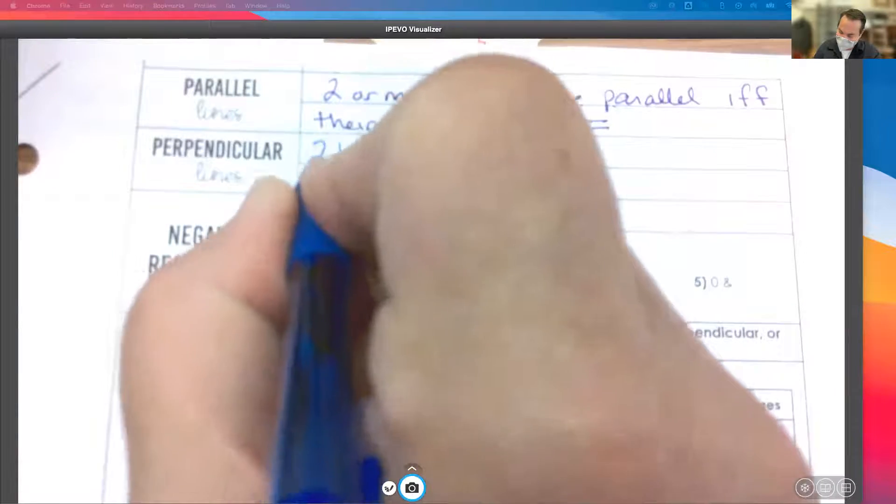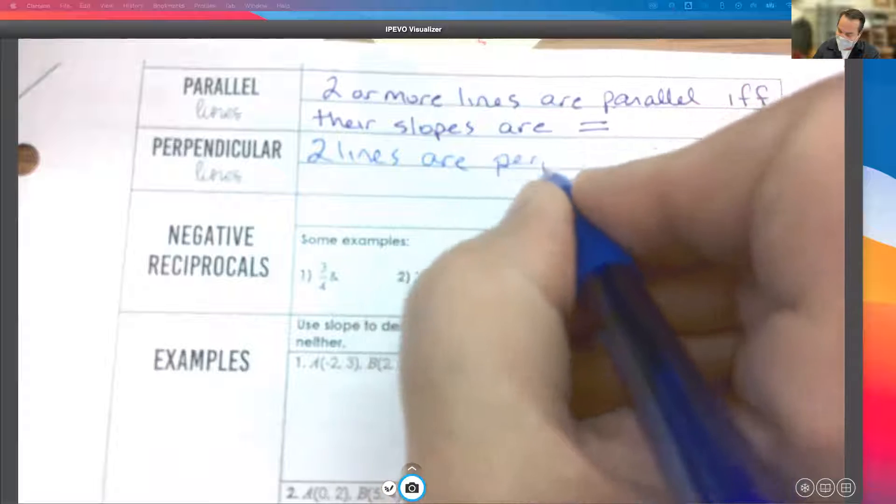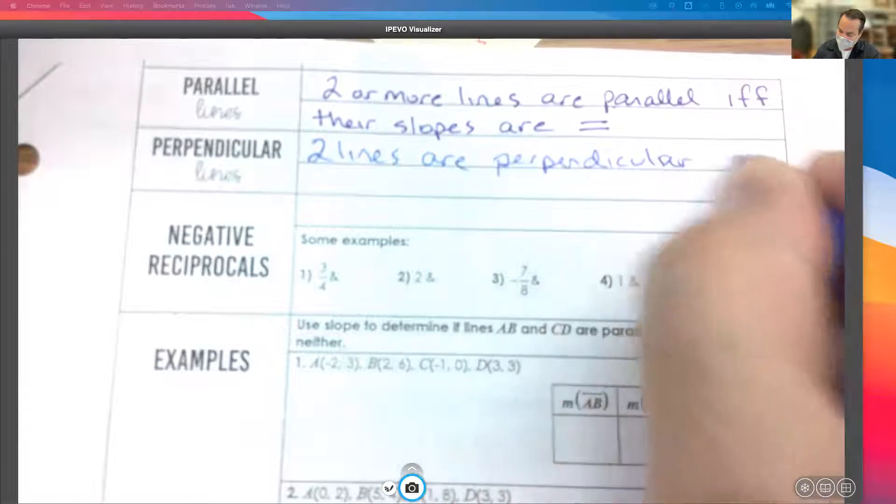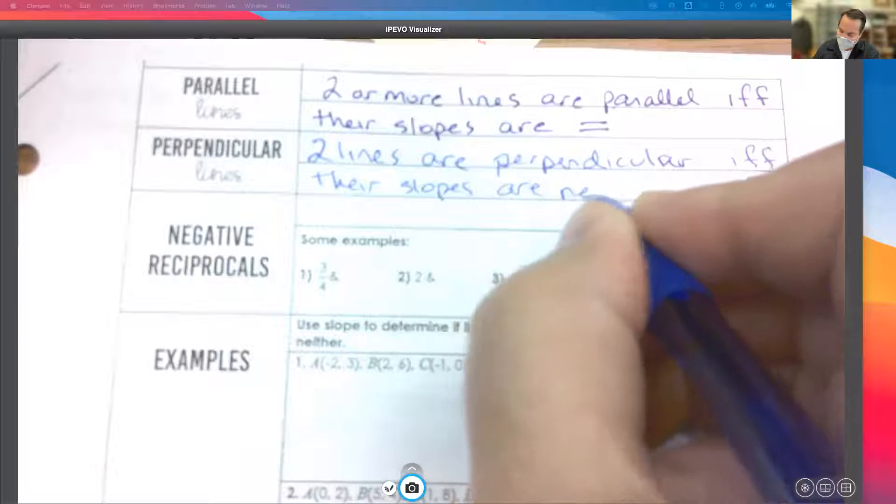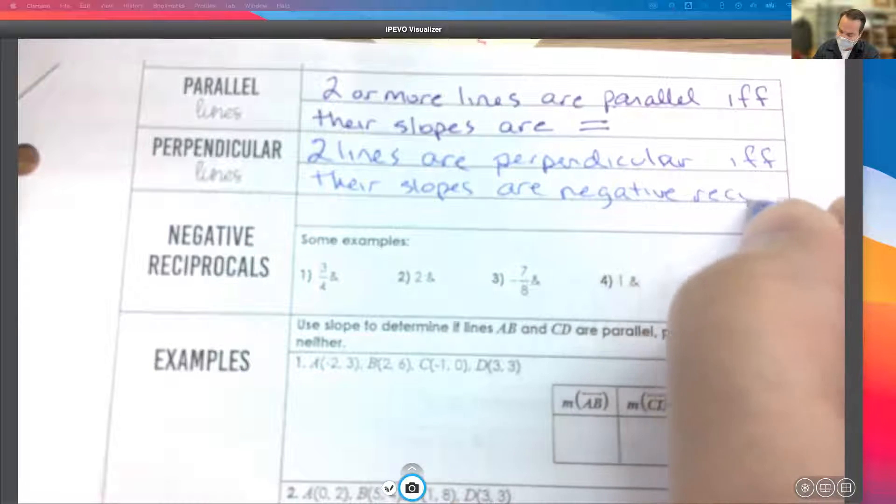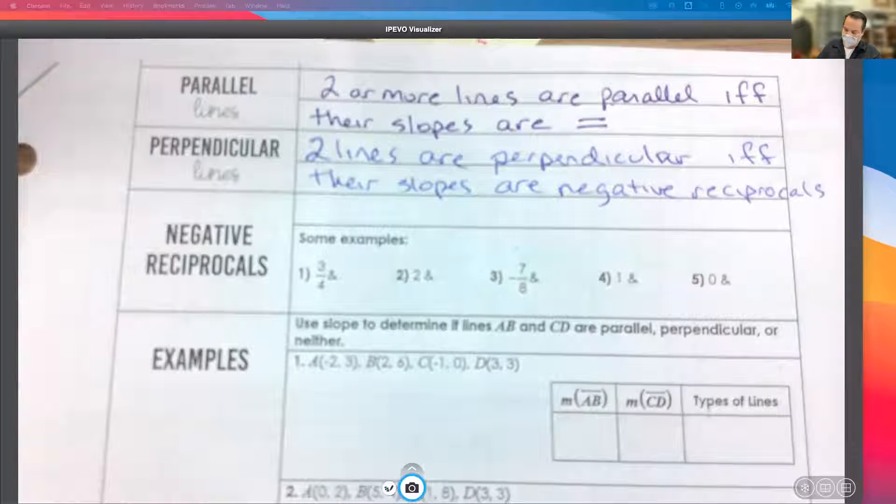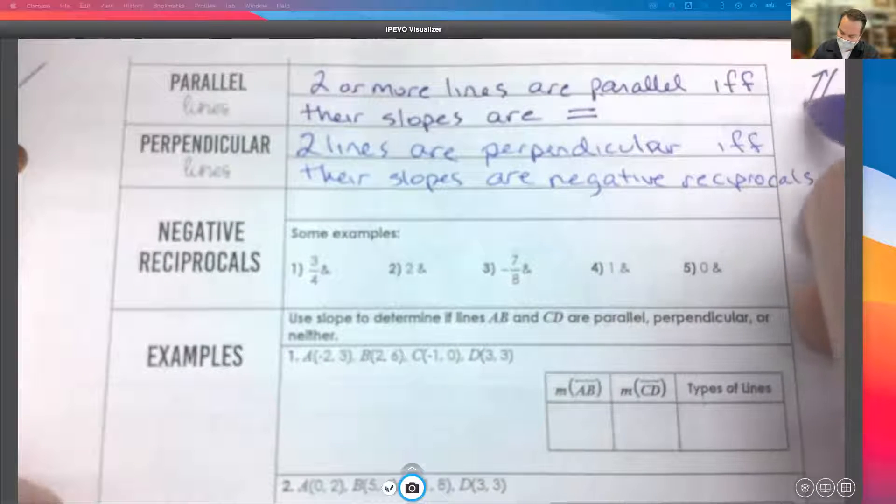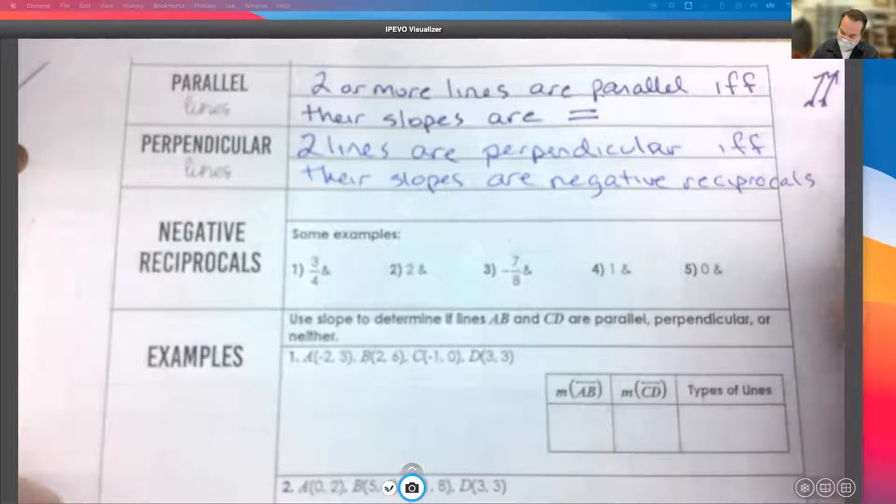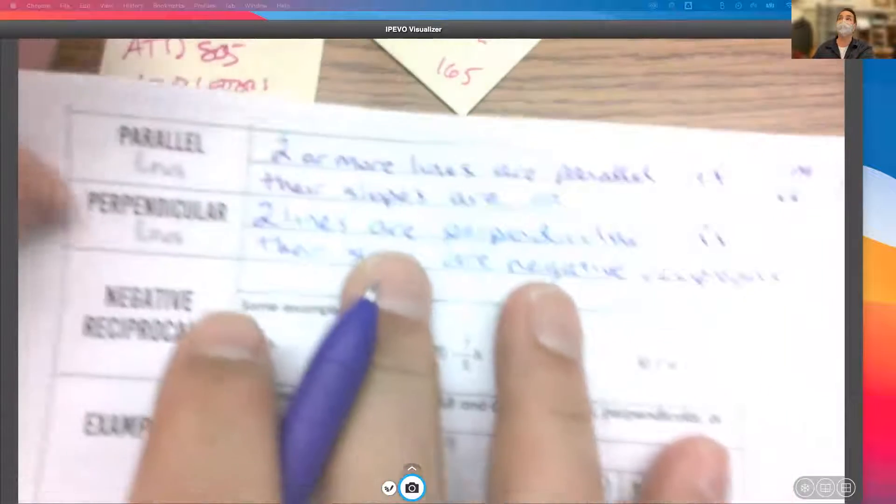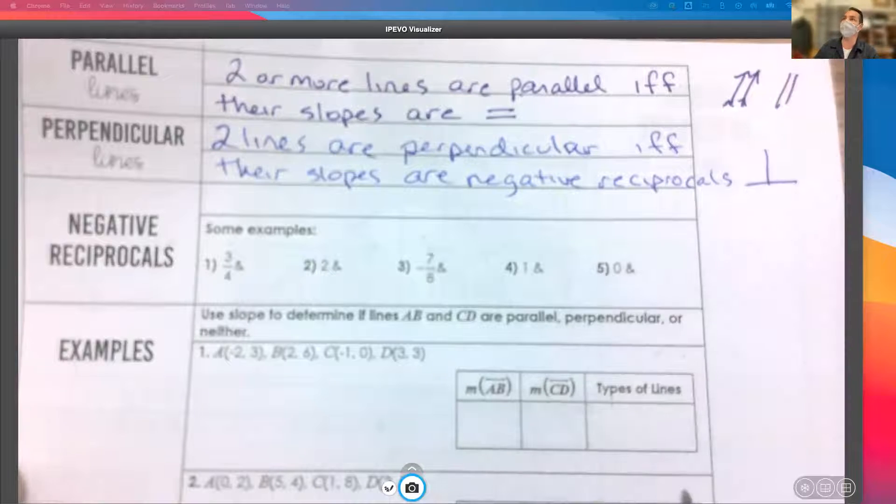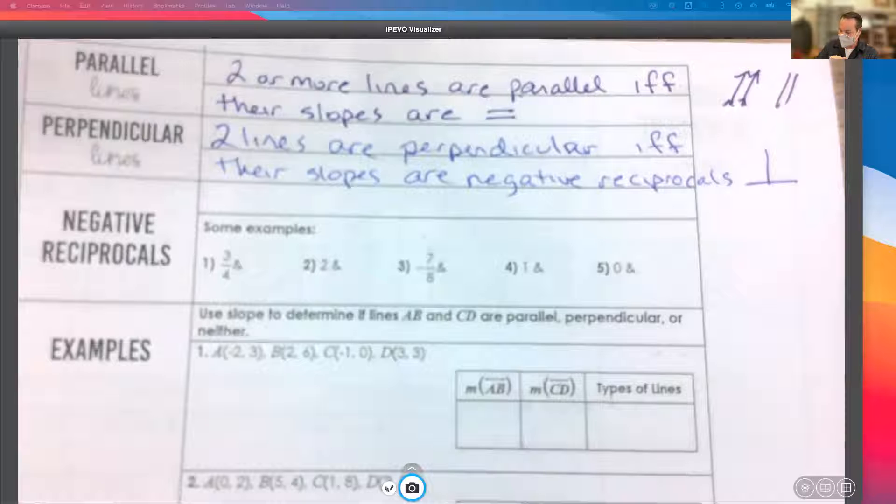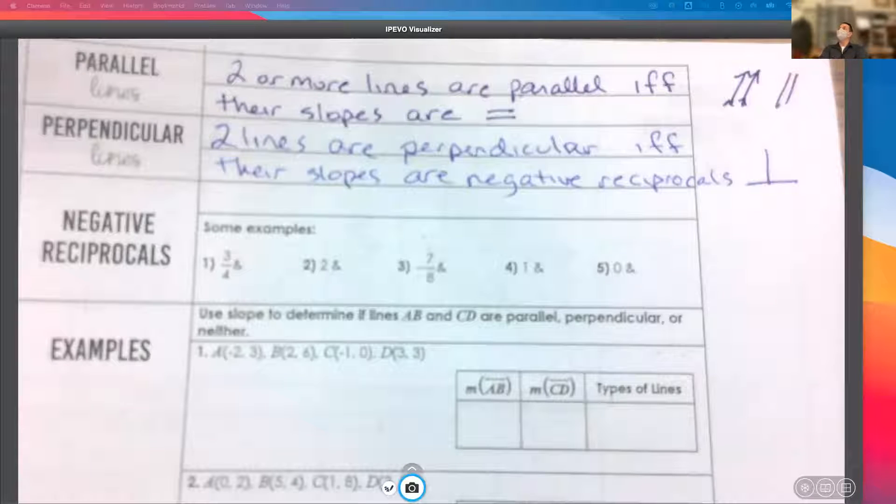Two lines are perpendicular. And just a reminder, parallel looks like, if they're perpendicular, it's one of my favorite words, perpendicular. And just a reminder, parallel looks like that, right? And so our symbol would just be two slash lines there. Whereas perpendicular would be a symbol like that. So for two lines to be perpendicular, I said their slopes have to be negative reciprocals. What does that mean?